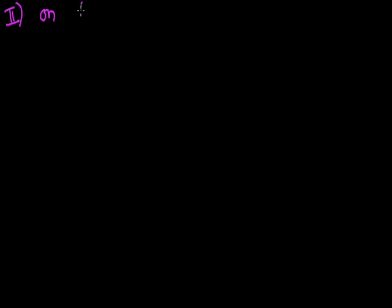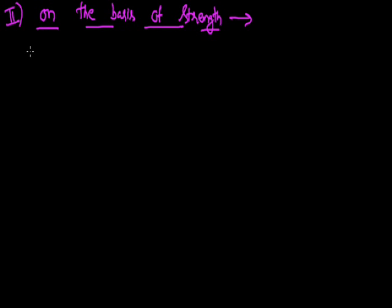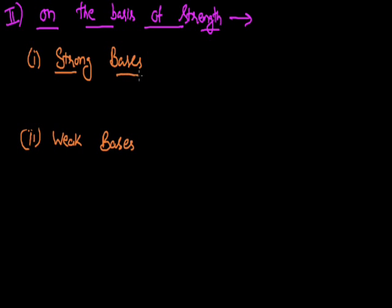The next classification of these bases is on the basis of their strength. On the basis of strength, bases can be categorized into two categories. The first category is strong bases, and the second category is weak bases. Strong bases are those which undergo complete ionization. Like if I take a hundred molecules of any base and all hundred molecules provide hydroxyl ions by ionization, then this base which goes for complete ionization is termed as a strong base.